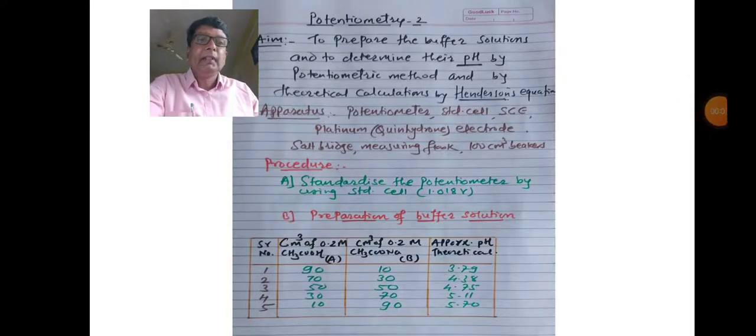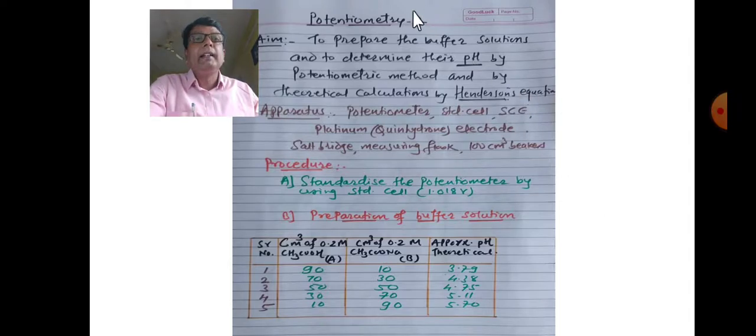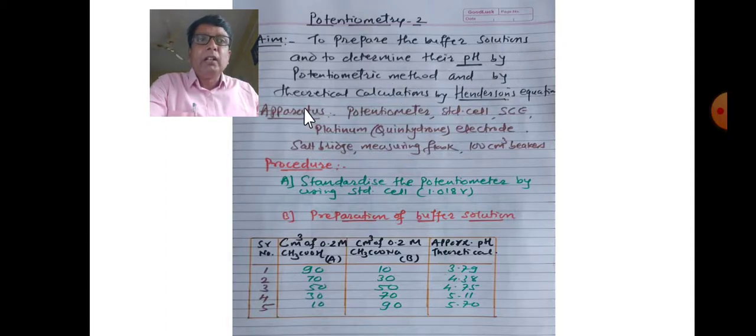Good morning. Basic part 3, physical chemistry practicals, instrumentation. Now potentiometry second. Yesterday we completed potentiometry first, now potentiometry second. The aim of the experiment is to prepare buffer solutions and to determine their pH by potentiometric method and by theoretical calculation by Henderson's equation.